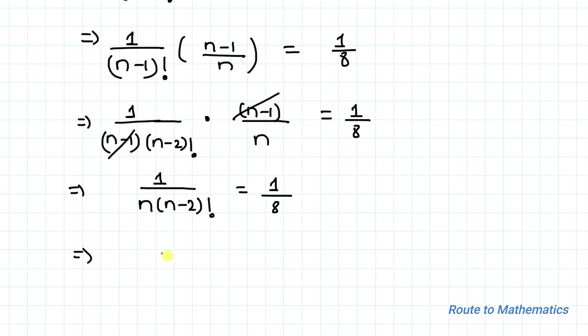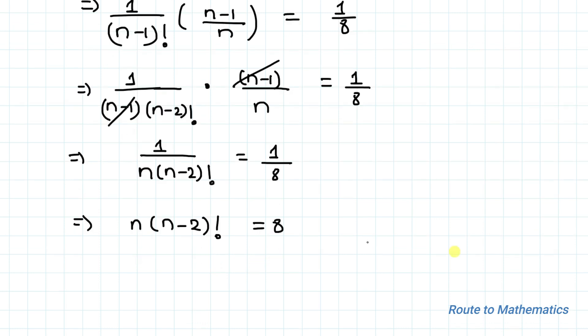Now by simply cross multiplication we can write n multiplied with (n-2)! equals to 8. As here we have given n factorial, factorial means we can find the factorial of only positive integers. This means n must be a positive integer.